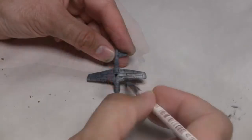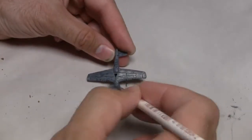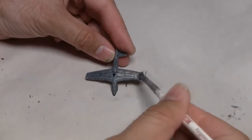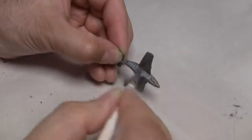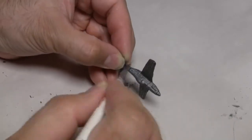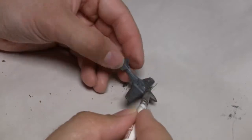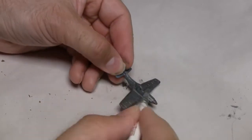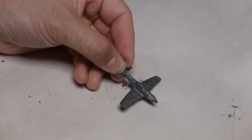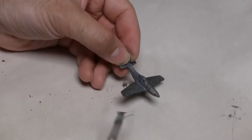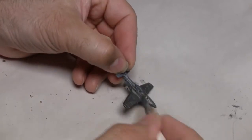For my miniature, first up, I'm going to be using Lead Belcher, a base paint from Games Workshop Citadel line of paints. I'm just going to dry brush this all over the miniature to give it a nice, even silver coat. And I'm using dry brushing to make sure the paint does not get in all little recessed details. This time around, for this step, I've got an Army Painter Small Dry Brush.